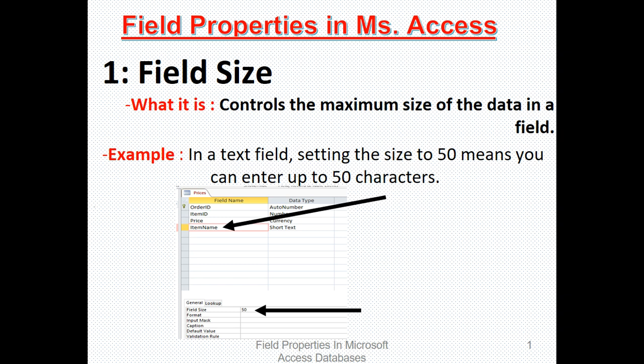In a text field, setting the size to 50 means you can enter up to 50 characters. You cannot exceed 50 characters. You can see that I have given item name, then gone down to the field properties and set field size to 50.